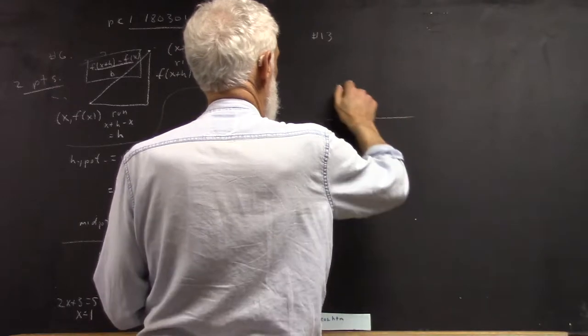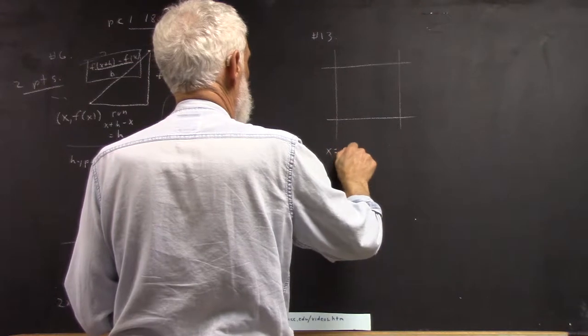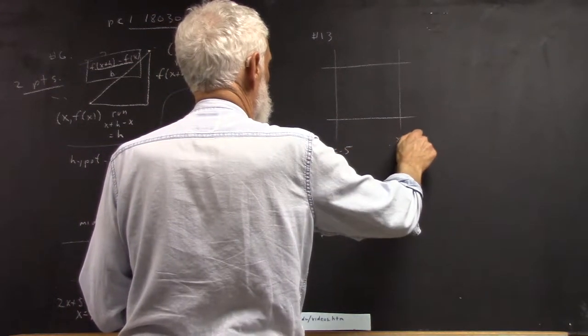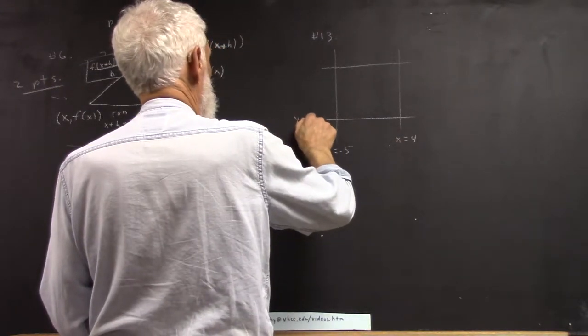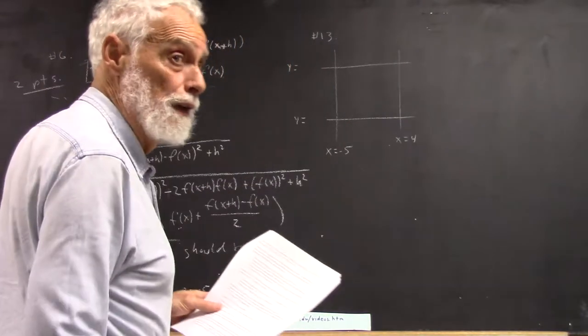So let me draw the lines and tell you, okay, that's x equals negative 5, then that would be x equals 4, this would be y equals whatever the lesser y value is, this would be y equals whatever the greater y value is.